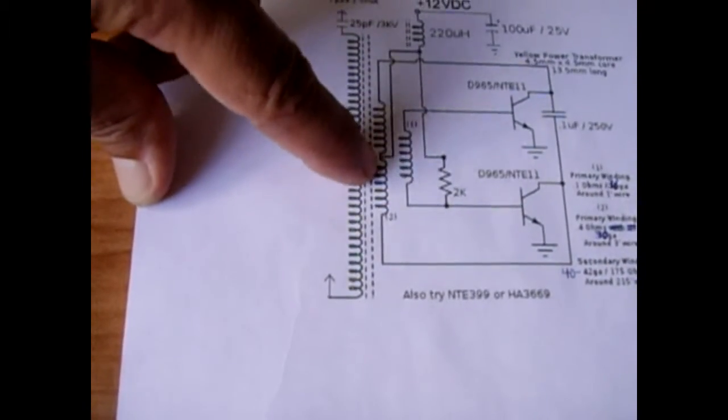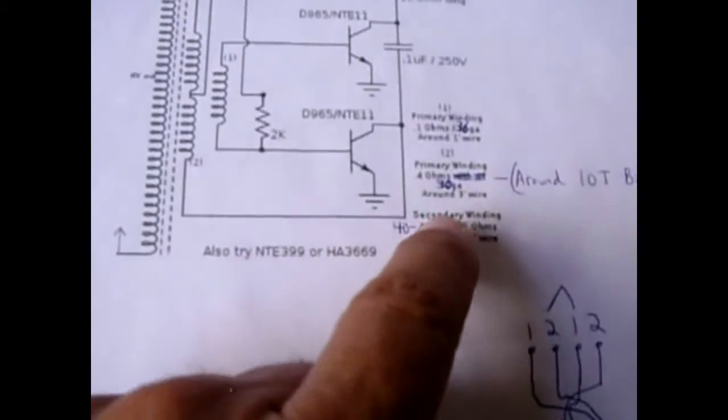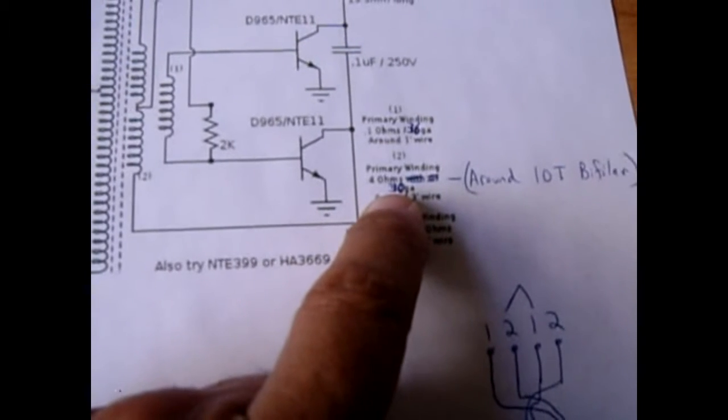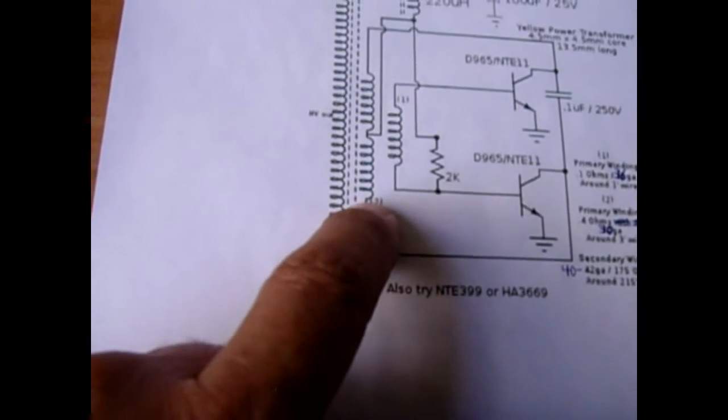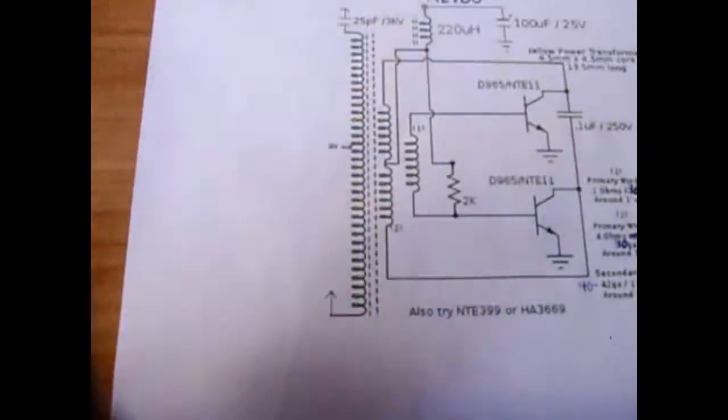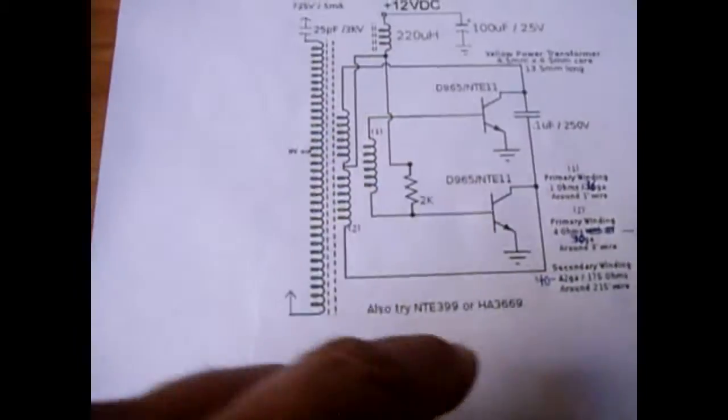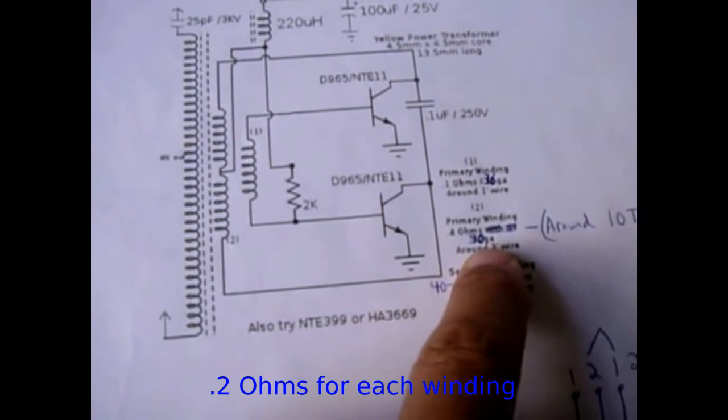And how you're going to wind this, now this is number two. Number two, the total resistance from this point all the way to this point is 0.4 ohms and that is wound with 30 gauge wire and it's roughly 10 turns bifilar wound.